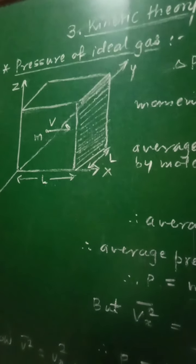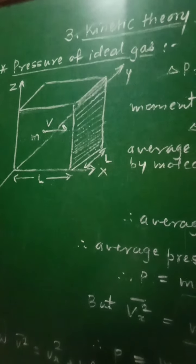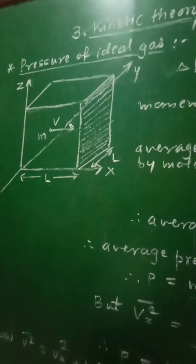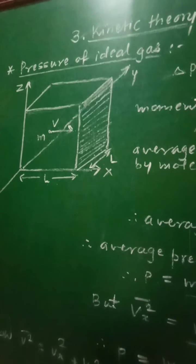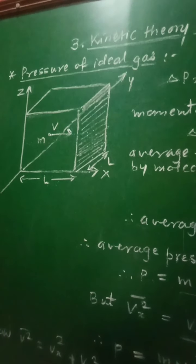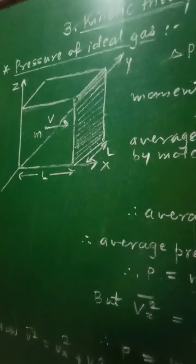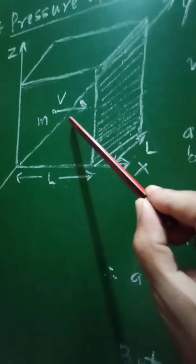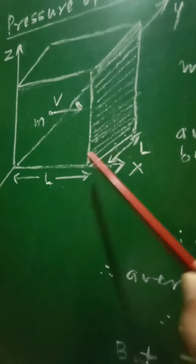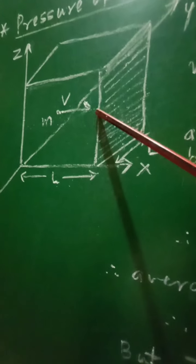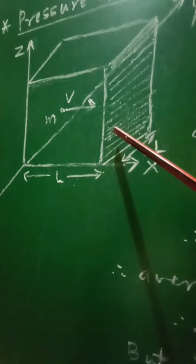Hence they will bounce back after colliding with the walls of the box. The intermolecular collisions, that is the collisions between the molecules of the gas, will be neglected and we will consider only the collisions of these molecules with the walls of the box. Let us consider a molecule of mass m moving with velocity v towards the shaded wall. When traveling towards the shaded wall it is traveling along the positive direction of the x-axis, and hence the velocity component along x-axis, vₓ, will be considered as positive.